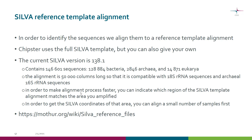In order to target it, you need the coordinates of that region in the SILVA template. If you don't know the coordinates, you can easily get them by doing a first small alignment with a small number of samples, so that it runs fast against the whole template. Then you will get the coordinates you can use in a second run.